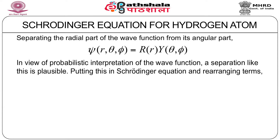In view of the probabilistic interpretation of the wave function, a separation like this is plausible. R(r), the radial wave function — if you square it, R², that tells you about the probability of observing a particle on the surface of a sphere for a given r. And if you want to find out the probability of observing the particle at a particular point on the sphere, then you multiply it by Y². So R² times Y² will give you the probability — that is, ψ² — of observing the electron at a given point on the sphere.